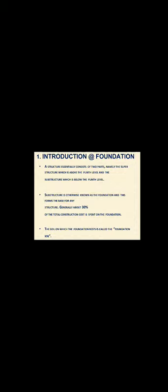A structure essentially consists of two parts: the superstructure and the substructure. The substructure is the foundation. The superstructure includes plinth, floor, wall, slab, chajja, and parapet wall. Everything below the plinth level is the substructure.